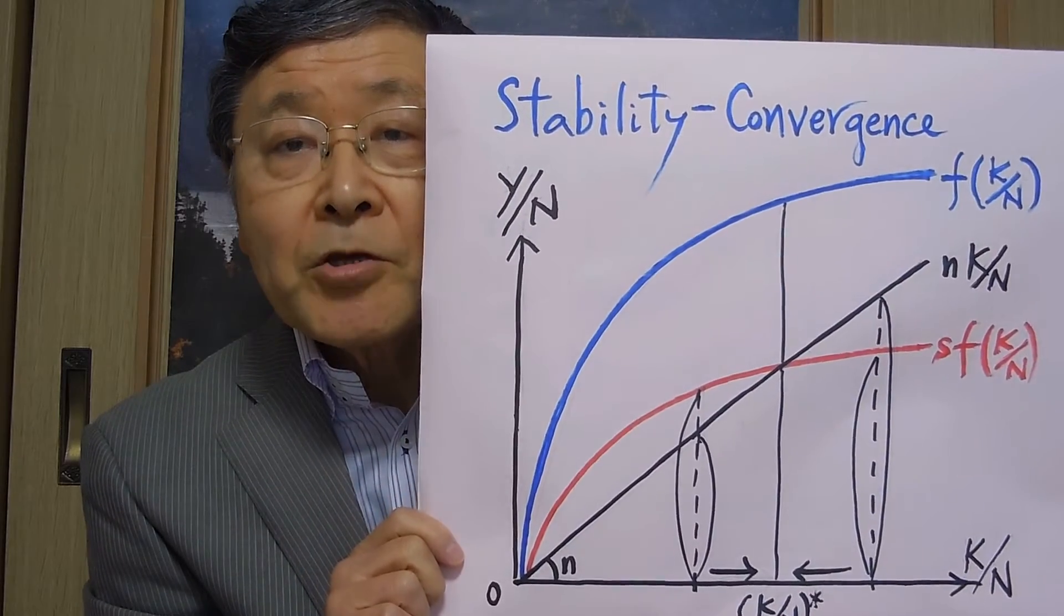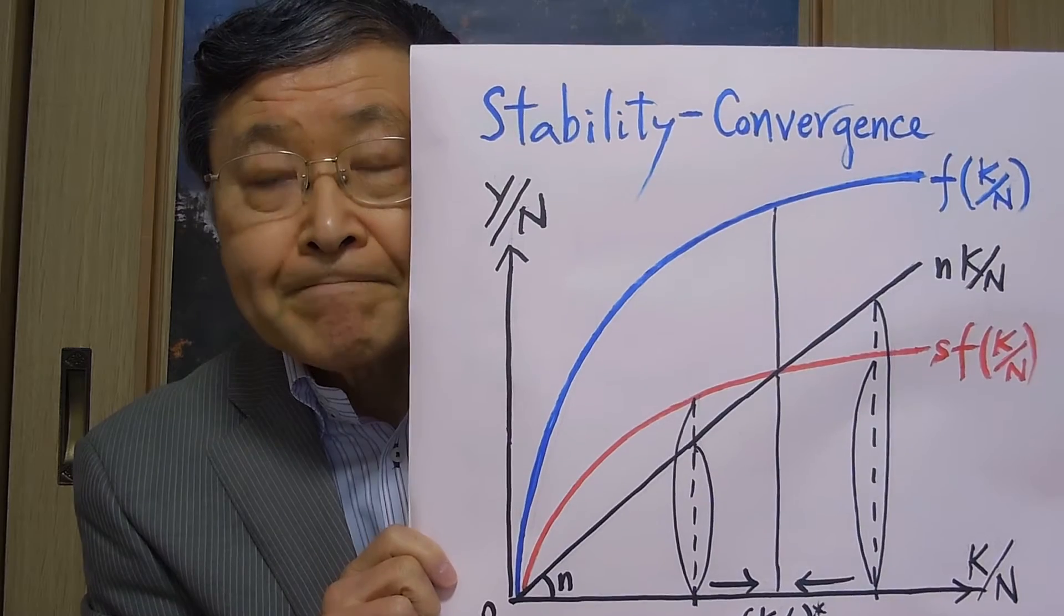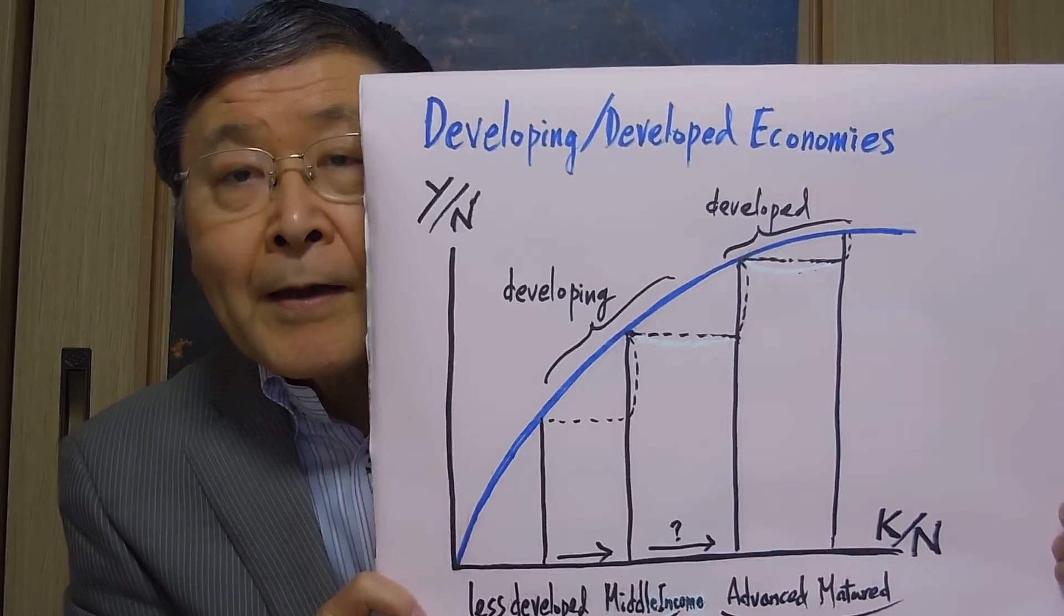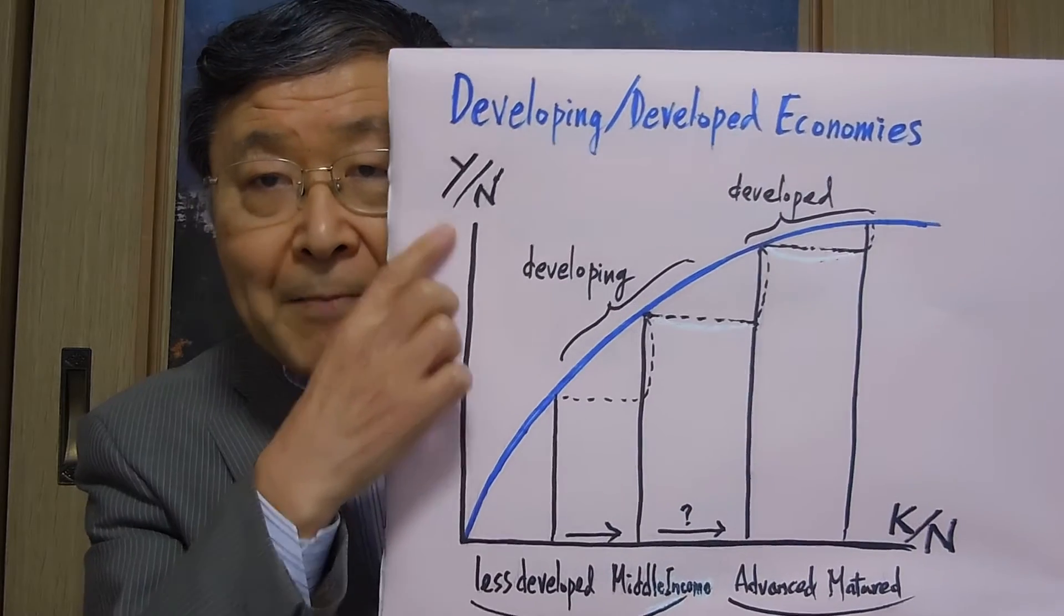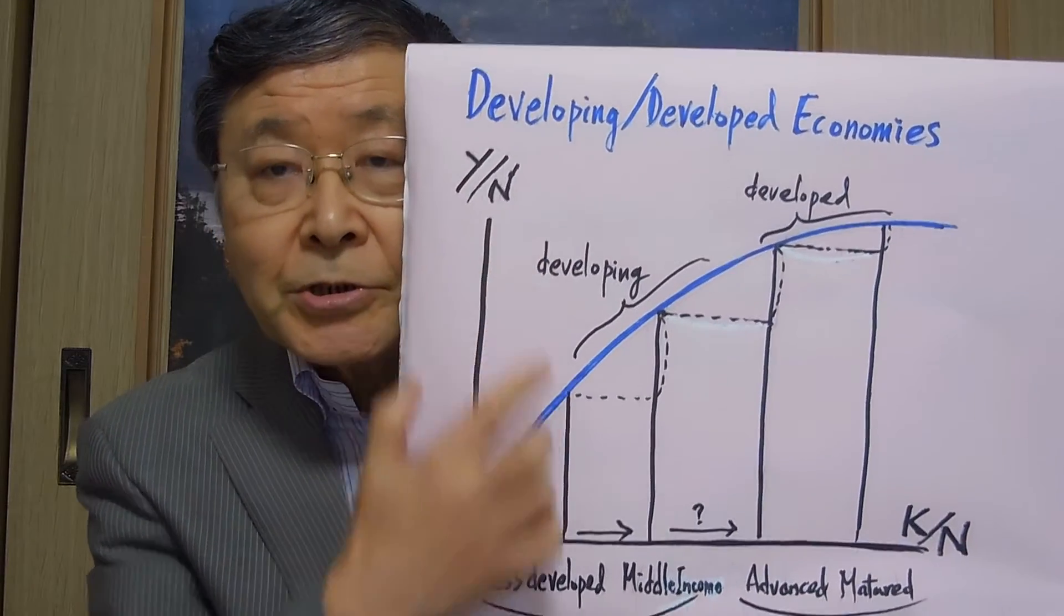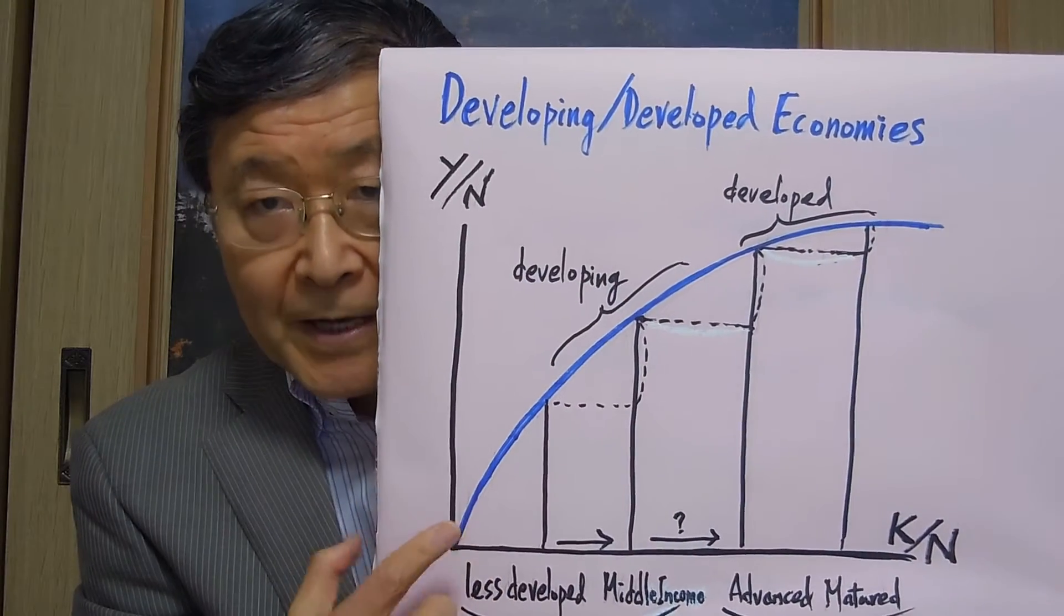Now, using this Solow model, we can interpret the developing and developed economies as this. Again, the same diagram, capital output-labor ratio and capital-labor ratio. Here is the relationship between those two variables.